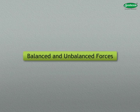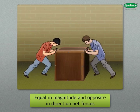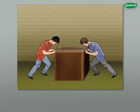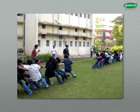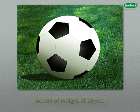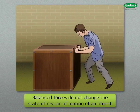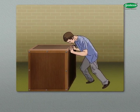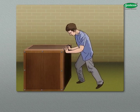Balanced and unbalanced forces. When two forces acting on a body are equal in magnitude and opposite in direction, the net force acting on the body is equal to zero. The two forces are balanced, so the body remains at rest. In the game of tug of war, when forces acting on both sides are equal, they are balanced. Similarly, when an object is kept on the ground, it remains at rest under the action of the weight of the object and the force of gravity. Balanced forces do not change the state of rest or of motion of an object; it moves with uniform velocity when forces are balanced and there is no net external force on it.